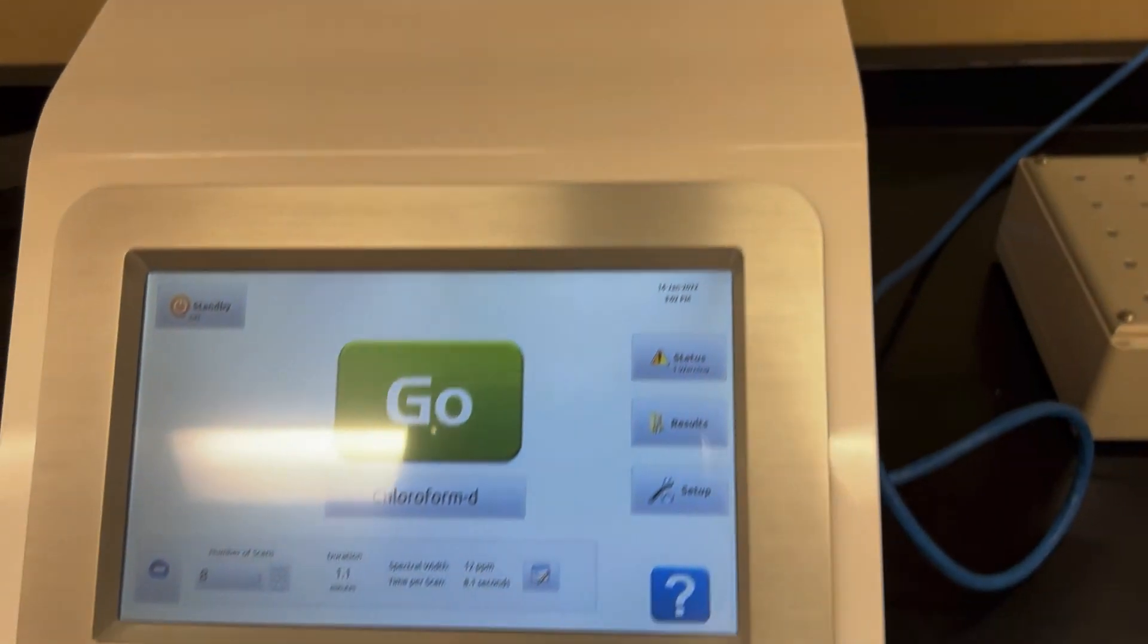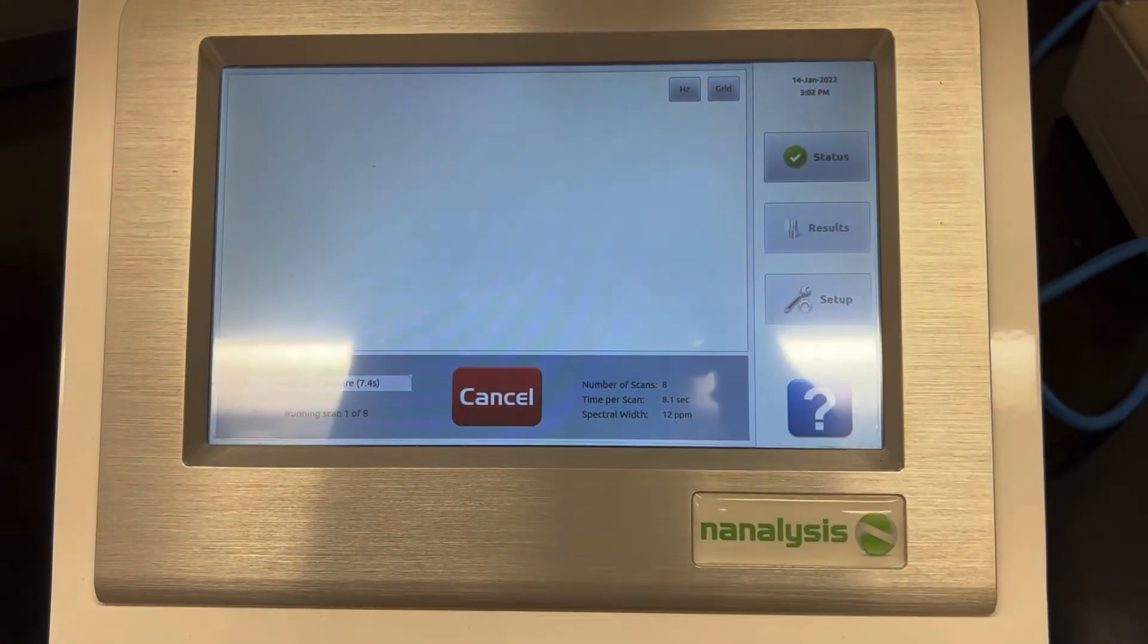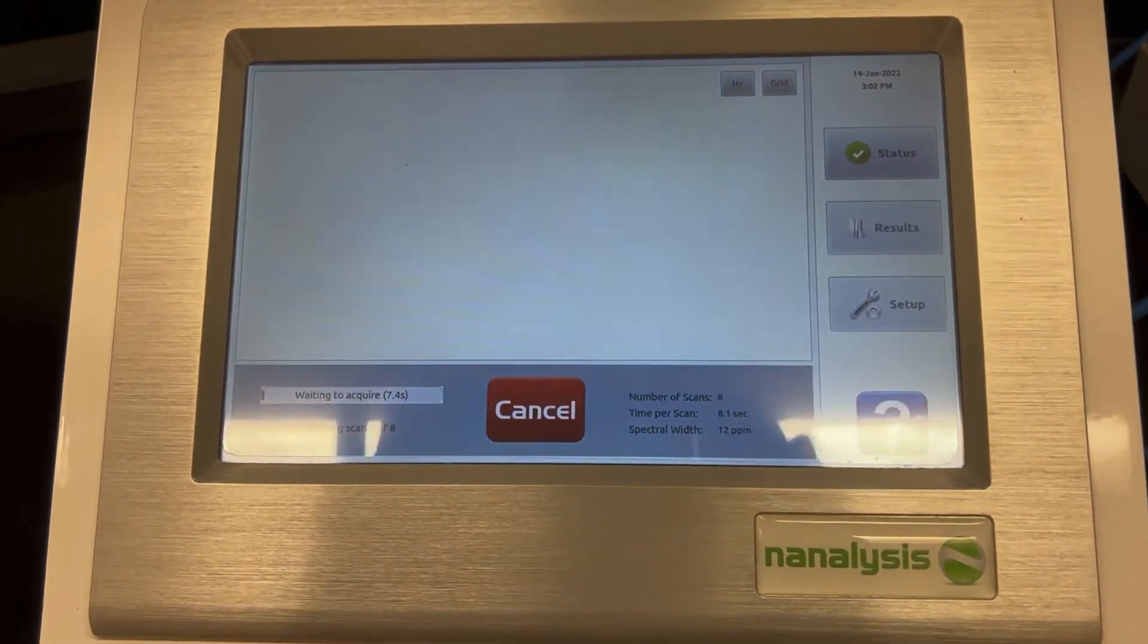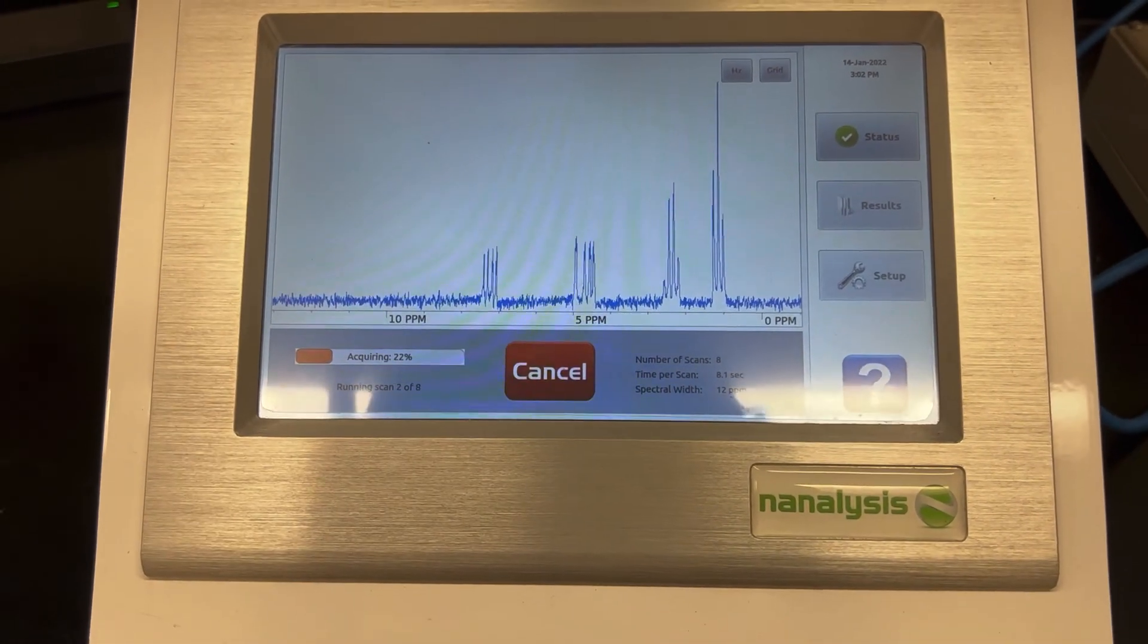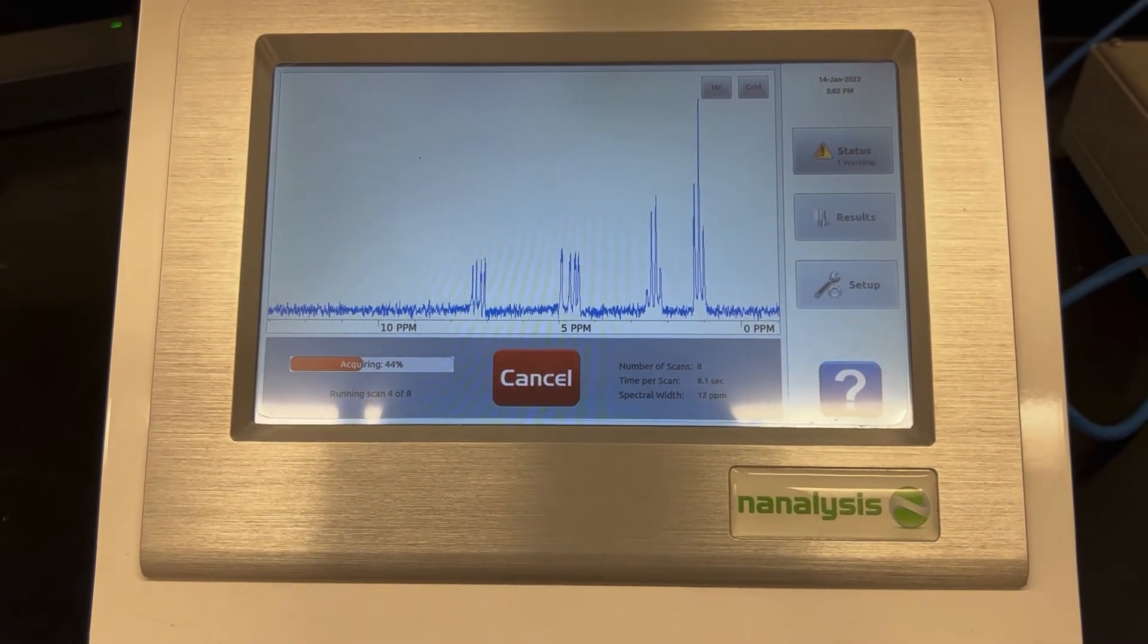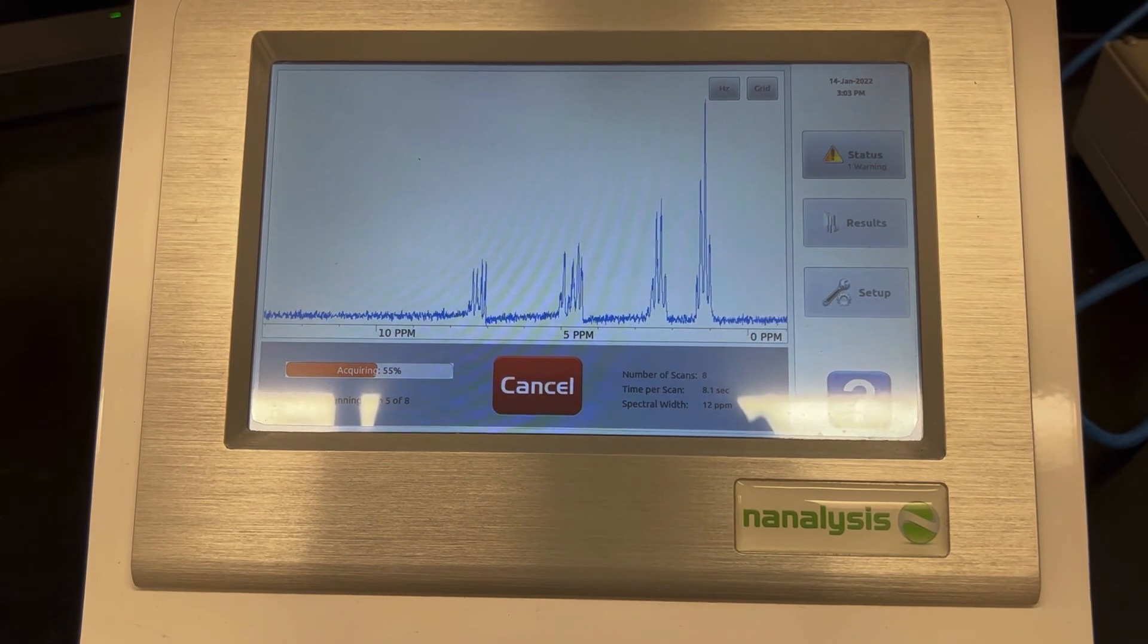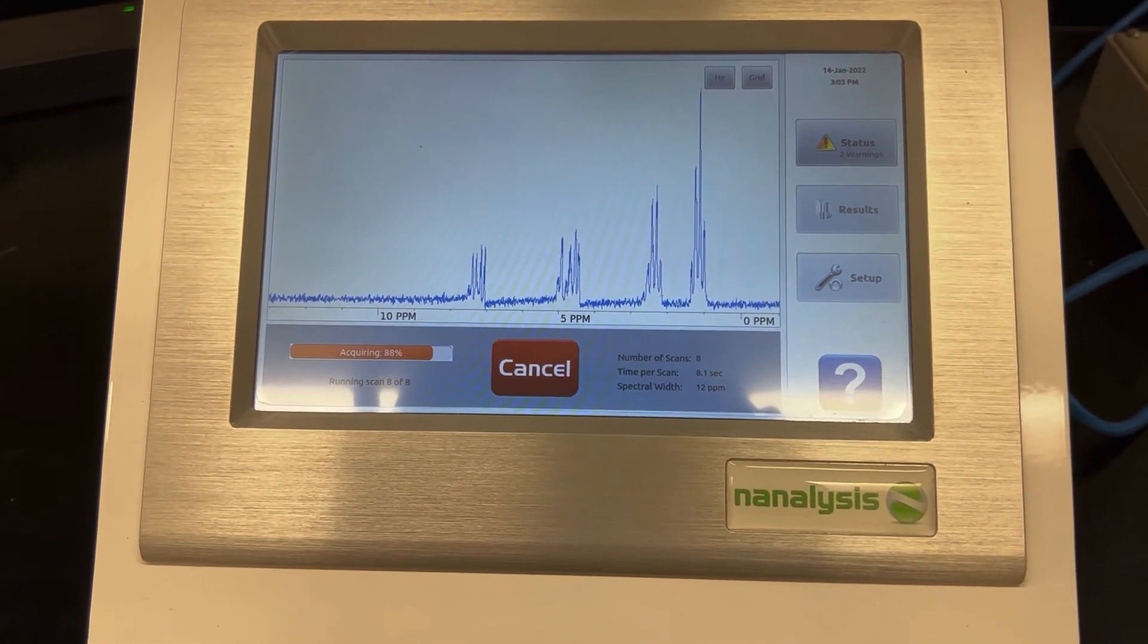And then it's pretty easy. On the touchscreen you're just going to push that big go button. I'm going to make this a little faster for you because it takes a little while, it probably takes about 30 seconds maybe a minute for a normal run, but you're going to have the spectrum show up and it'll keep on getting better and better as more scans happen. You'll know when it's done when that cancel button goes away.